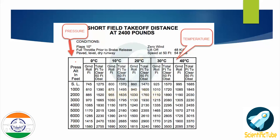Let's have a look at this chart. On the left-hand side we have the pressure altitude in feet, and on the right-hand side we have the temperature. At sea level the ground roll is 745 feet, but at 3,000 feet pressure altitude the ground roll increases to 970 feet. Similarly, temperature affects performance: at 0°C the ground roll is 745 feet, but at 40°C the ground roll at sea level is 995 feet.